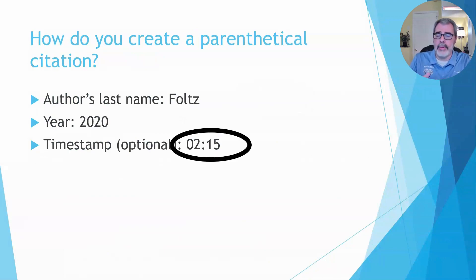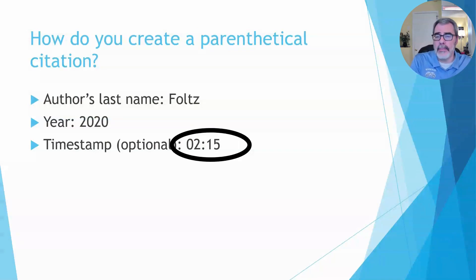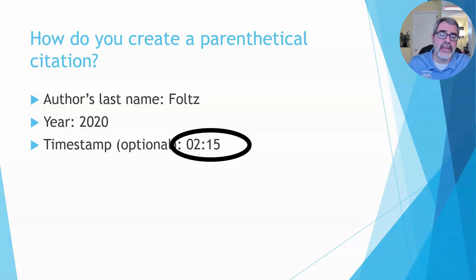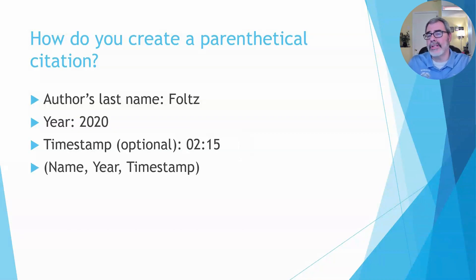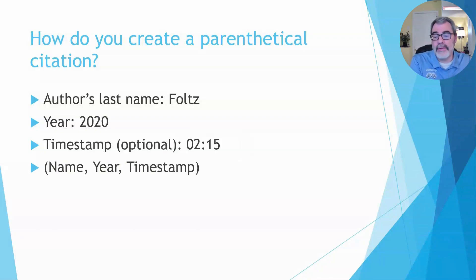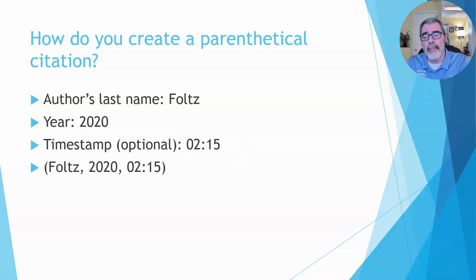One thing to keep in mind is that the standard for recording the timestamp only uses two sets of numbers for the minutes and seconds, because most YouTube videos aren't going to reach the one-hour mark. But if it does — meaning if you're citing a YouTube video that is an hour or longer — then you'll need to add a third set of numbers to represent the hour. The structure of your citation is traditional APA: name, year, and timestamp. Think of the timestamp as the page number. Notice that you have commas between each portion of the parenthetical citation with appropriate spacing.